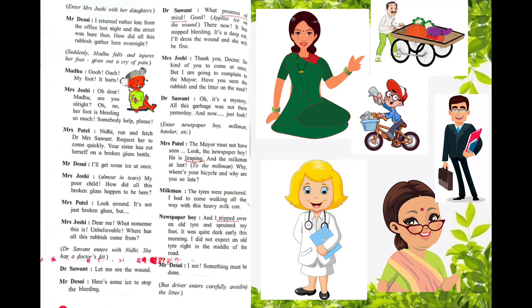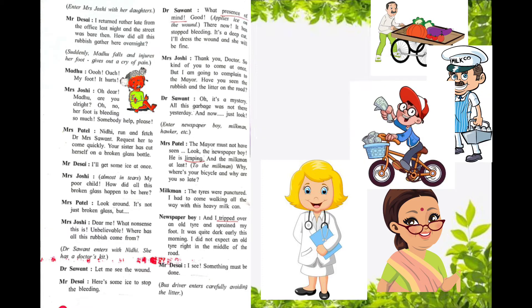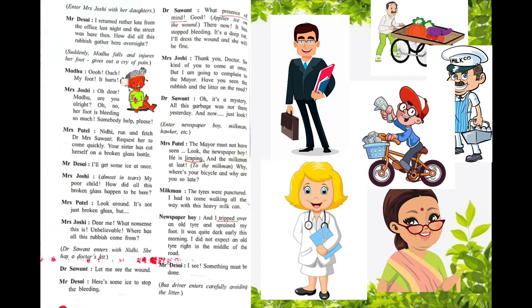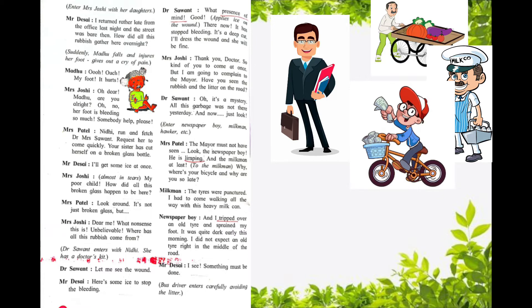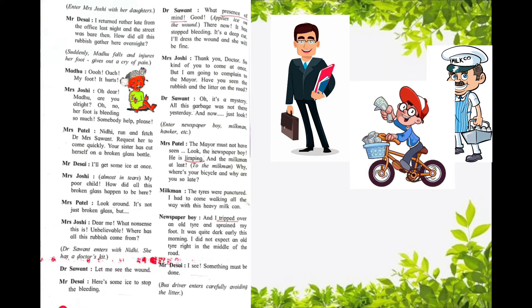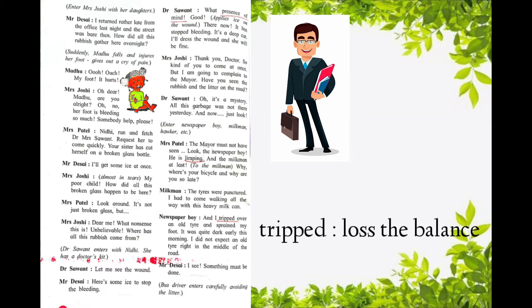Now the newspaper boy, milkman and hawker all entered. Mrs. Patel said, 'The mayor must not have seen this. Look — the newspaper boy is limping.' Underline 'limping'. Limping means walking slowly or with difficulty because of an injured leg or foot. He also got hurt because of the litter and garbage on the road, that's why he was late to deliver the paper. The milkman was also late because his tire got punctured. The newspaper boy said, 'I tripped over an old tire and sprained my foot.' That's why he was also late.